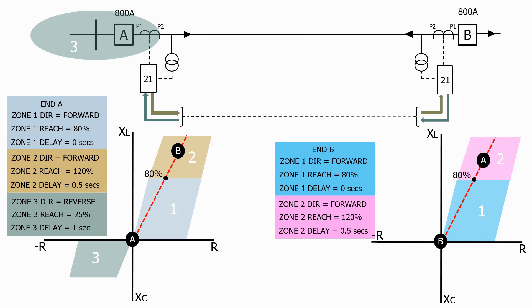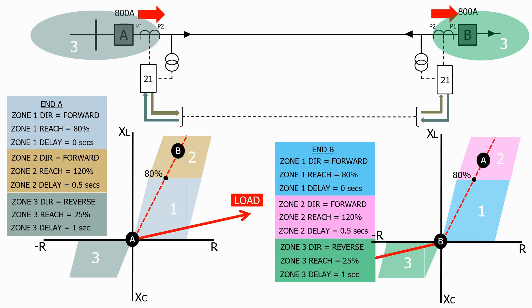Let's add a similar reverse zone on end B. Let's now close the circuit breaker and add a bus bar fault at end A.